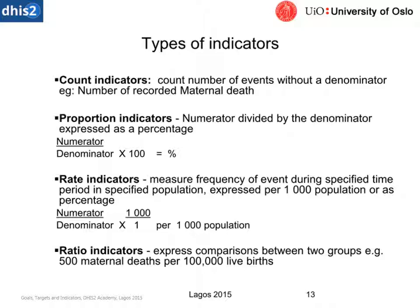Proportion indicators are the numerator divided by the denominator expressed as a percentage — numerator over denominator times 100 — and in the data visualizer we can show that as a percentage. Rate indicators measure the frequency of events during a specific time period in a specified population, often expressed as per 1,000 population or as a percentage, depending on how you want to look at it, and it's very easy to make that indicator or change it within the system.